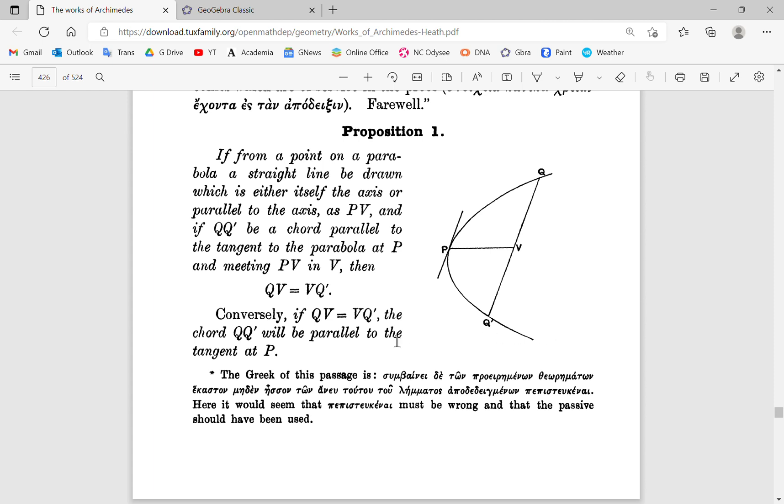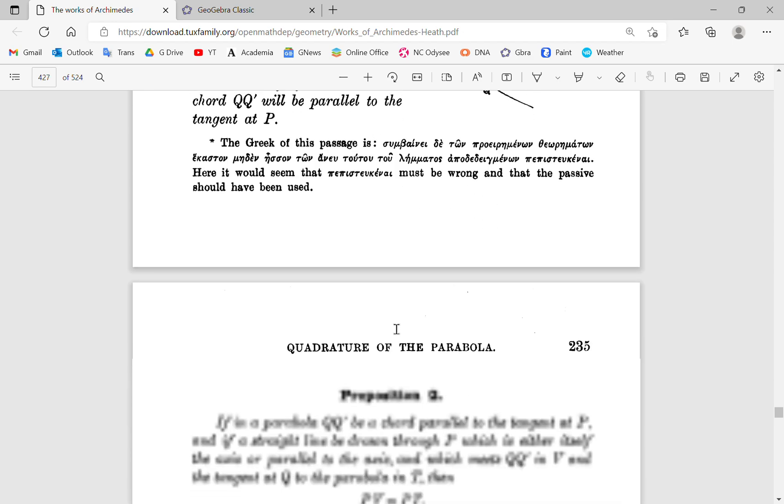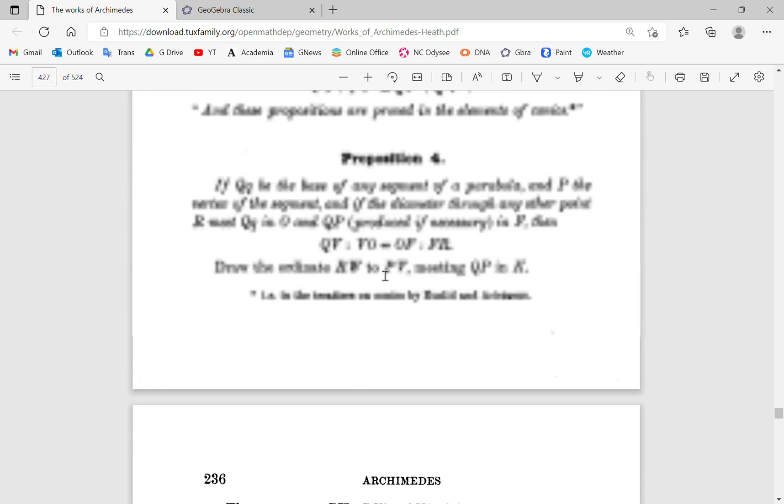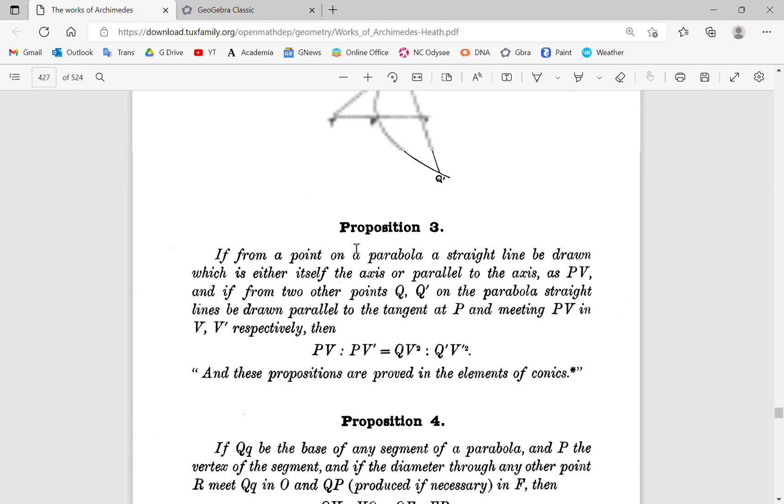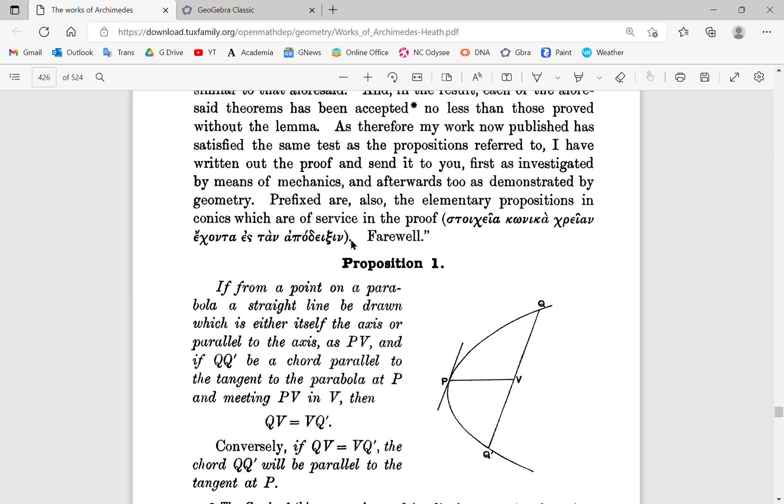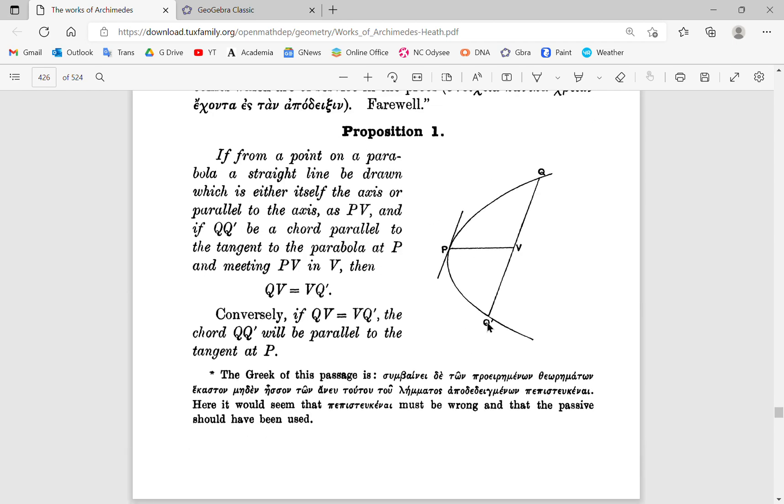So what does Archimedes do then? He simply states the propositions and then he continues from the fourth one to prove everything that he needs to prove. But if one is first confronted with this proposition, it's actually very hard to understand why the proposition is true.